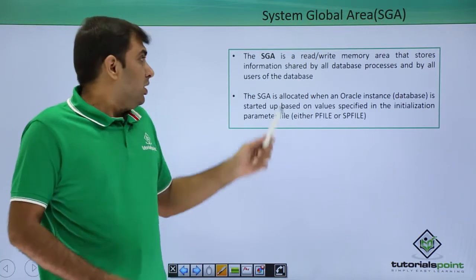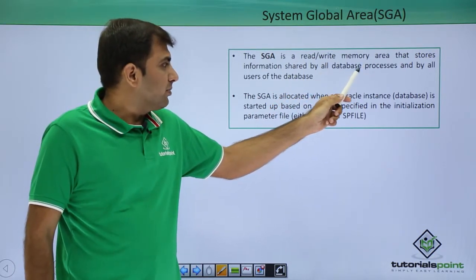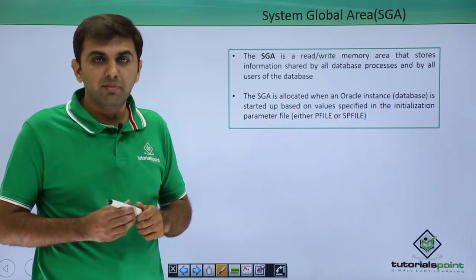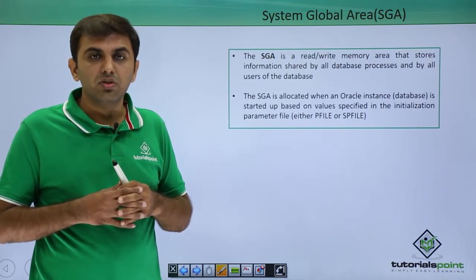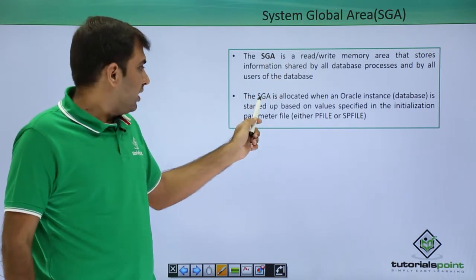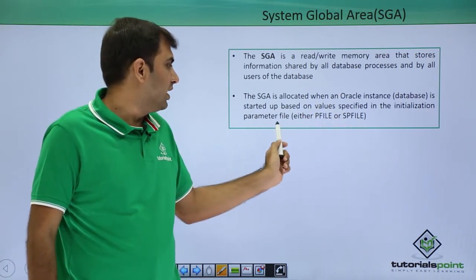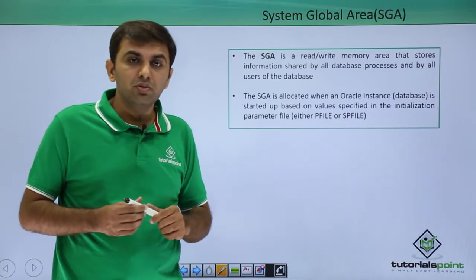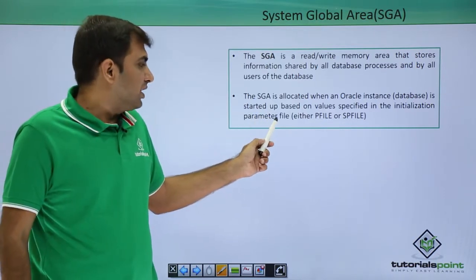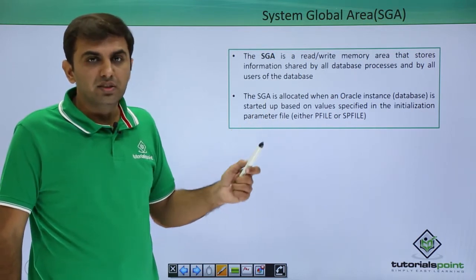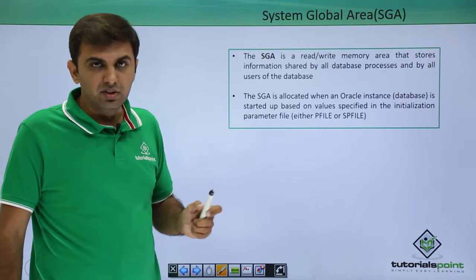What is SGA? SGA is a read and write memory area that stores information shared by all database processes and users of the database, so it is a shareable object. Whatever activity you are doing — like selecting, inserting, updating — all this information is stored under the SGA. The SGA is allocated when the Oracle Instance starts up, based on the value specified in the initialization parameter file, either SP file or P file.